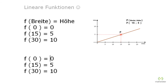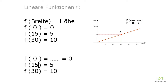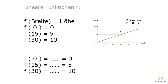Looking at our table: if I set the width to 0, the height is 0. If I use the width 15, we get a height of 5. And if I use the width 30, the height comes out as 10. The function value of the width 0 must equal 0. The function value at a width of 15 must equal 5. And the function value at a width of 30 equals 10. This something in the middle — the formula — we are about to find now.